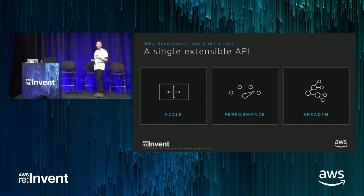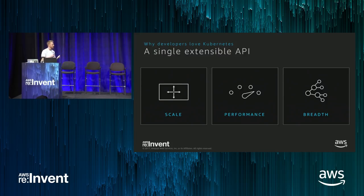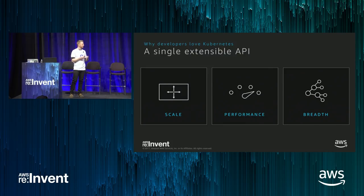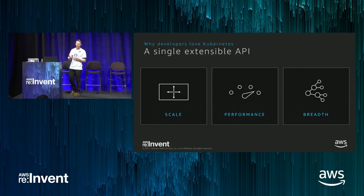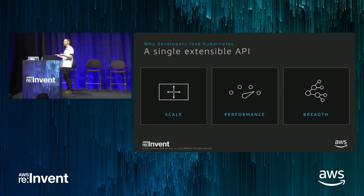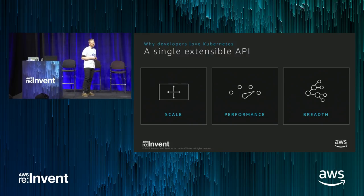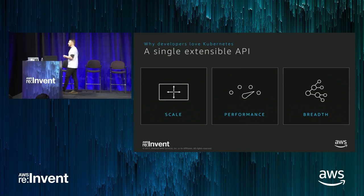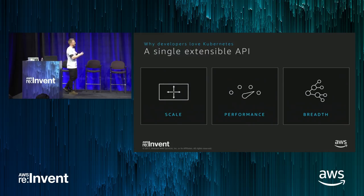The Kubernetes API is extremely powerful — it can be thought of as a single abstraction layer that can help you abstract resources both within AWS and on-premise. When you're using Kubernetes on AWS, you can take advantage of the underlying platform: the scale, performance, reliability, and breadth of features that come with AWS via Kubernetes cloud integrations. But you can use that same familiar API on-premise or on your laptop, making it easy to develop and move things to the cloud when you're ready.